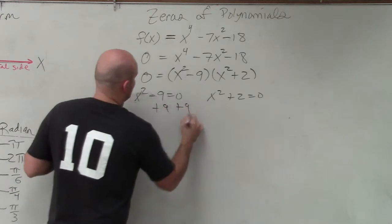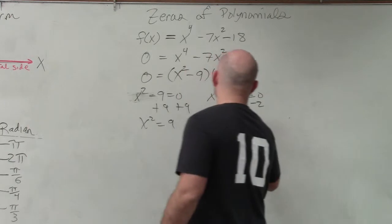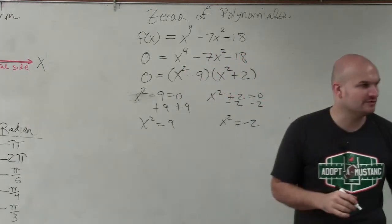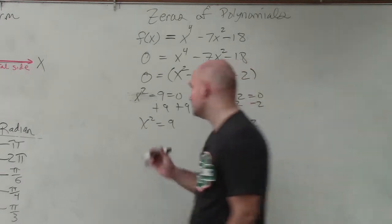Add 9, add 9. x squared equals 9. Subtract 2, subtract 2. x squared equals negative 2. Can we solve when we have a variable squared? We just need to take the square root.